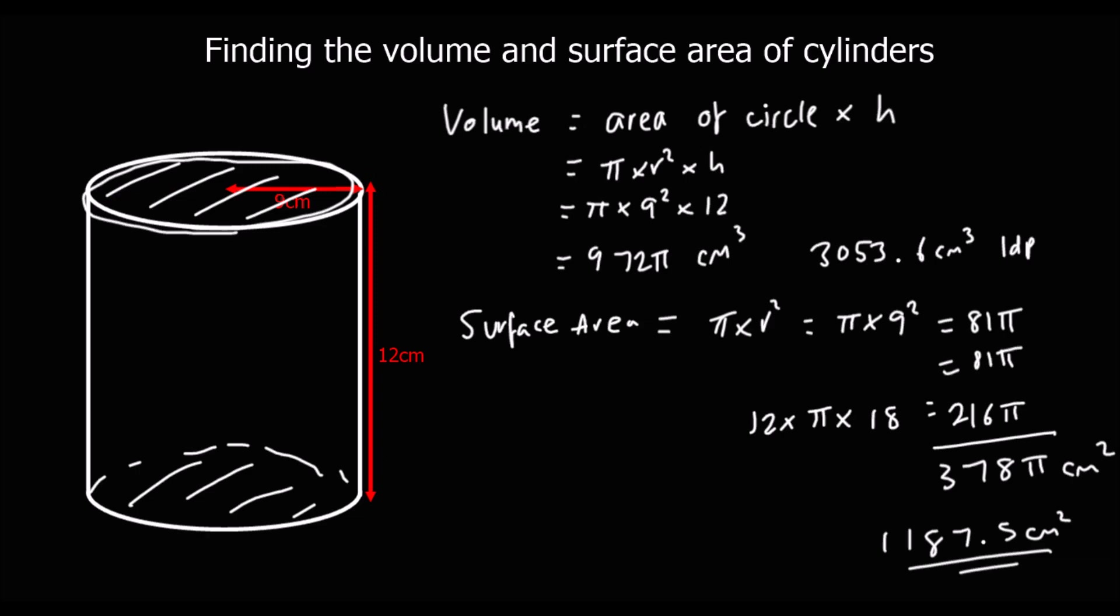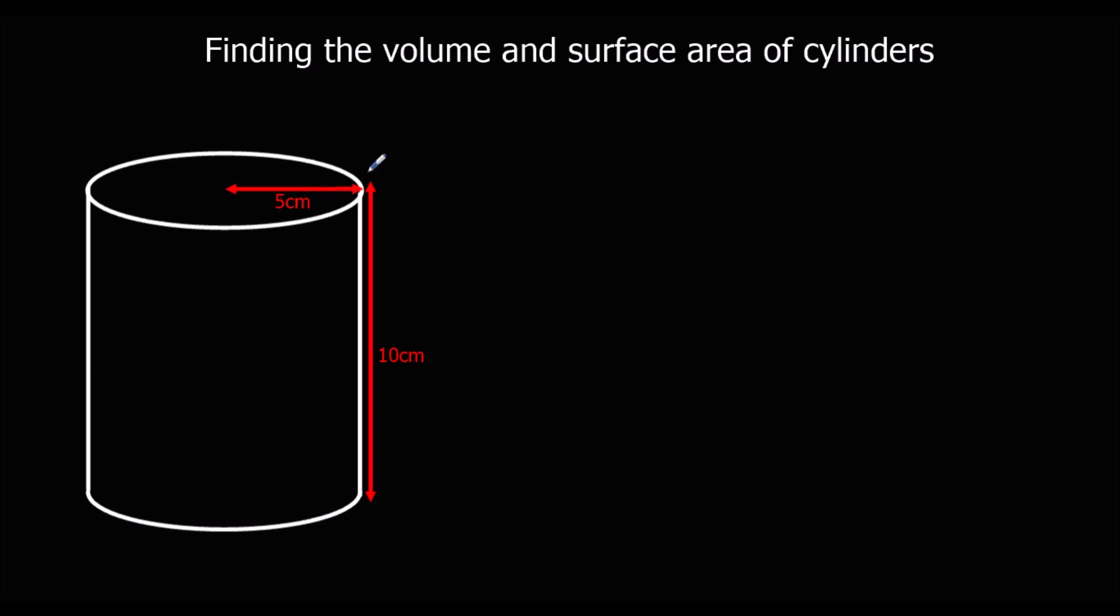We'll do another example. We'll start with volume again. Area of the top or area of the bottom is pi times 5 squared, pi r squared, times the height which is 10. So that would be 250 pi, or as a decimal 785.4, and that's volume so it's centimeters cubed.